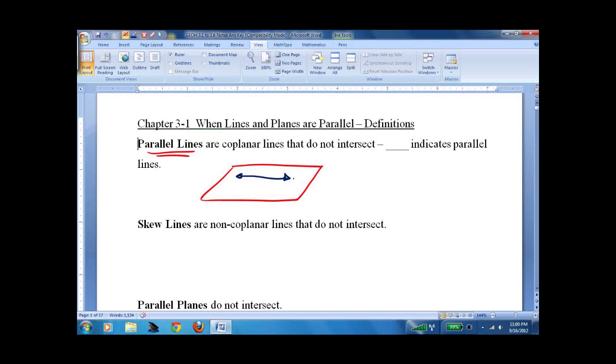Call this line L. Call this line N. Let's imagine I drew them a little better. Actually, my computer glitched on me. This double line indicates they're parallel. So I would say L is parallel to N.